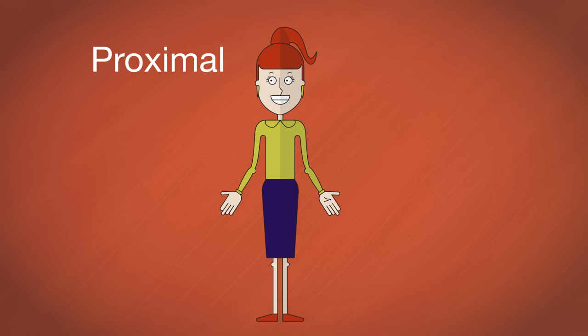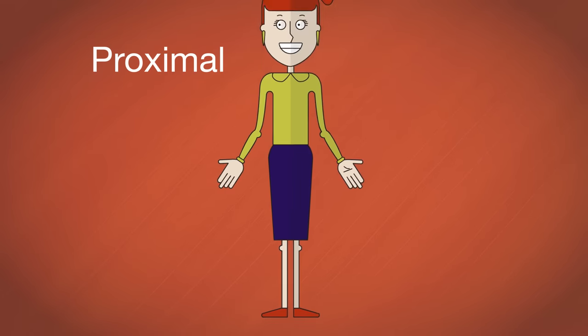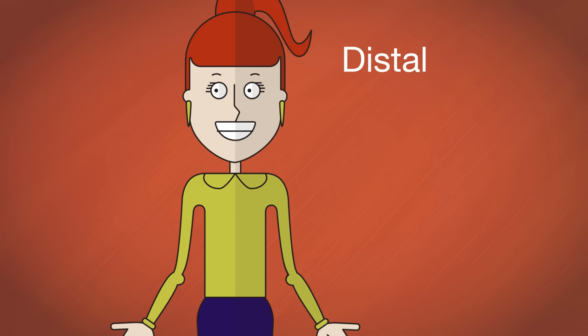The terms proximal and distal compare the relative positions of the parts of the arm or the leg. Proximal refers to the part closer to the point of attachment. For example, the knee is proximal to the ankle because it's closer to where the leg is attached to the body. Distal is the part farther away from the point of attachment. For example, the wrist is distal to the shoulder.